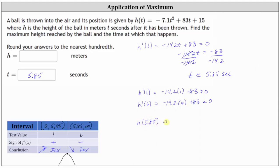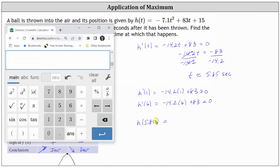Let's go ahead and do this on the calculator. h of 5.85 is equal to negative 7.1 times the square of 5.85 plus 83 times 5.85, and then plus 15. Again, to the hundredths place value, the maximum height is 257.57 meters.